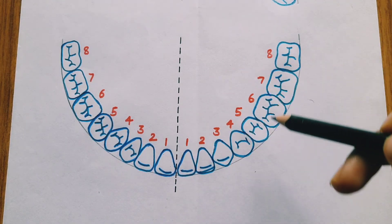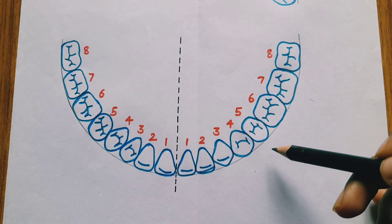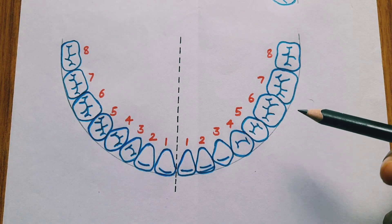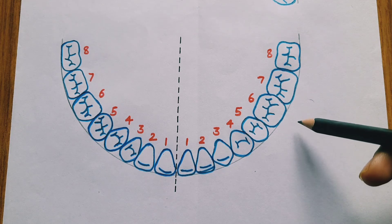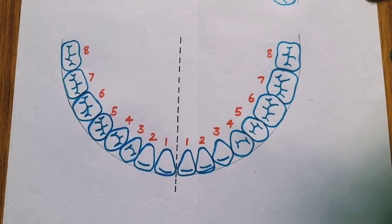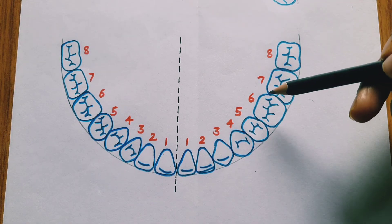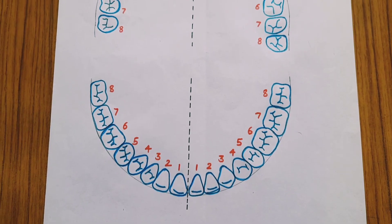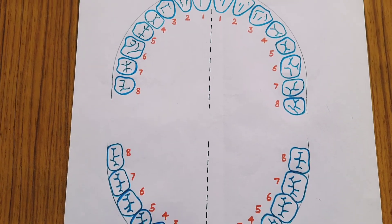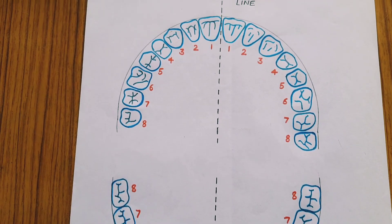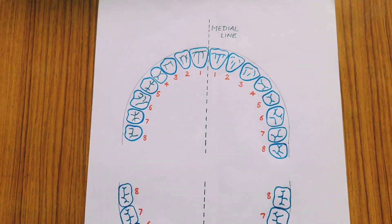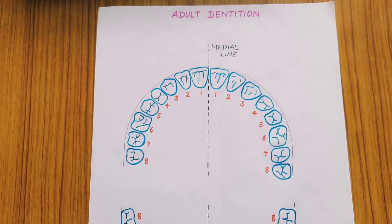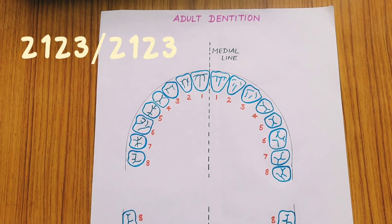Now what about the lower jaw? We also get 16 teeth from the lower jaw, and together we get 32 teeth on adding the ones from both jaws. Since we have two incisors, one canine, two premolars, and three molars on each side of both the upper and lower jaws, we write the formula as 2/2, 1/1, 2/2, 3/3.